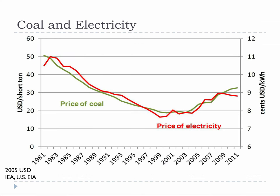Fossil fuels play important roles in electricity generation. Therefore, the price of electricity is closely linked to the fuels from which the electricity is generated. The divergence that is starting to happen in 2011 in the graph is due to natural gas, but the price of coal is also starting to rapidly drop, which will change availability since it is already produced at fairly minimal profit margins.